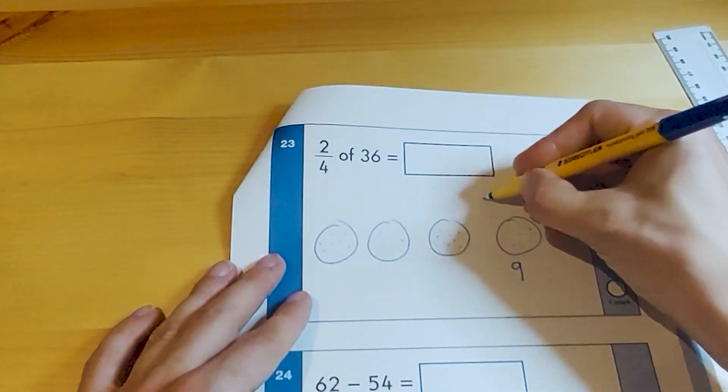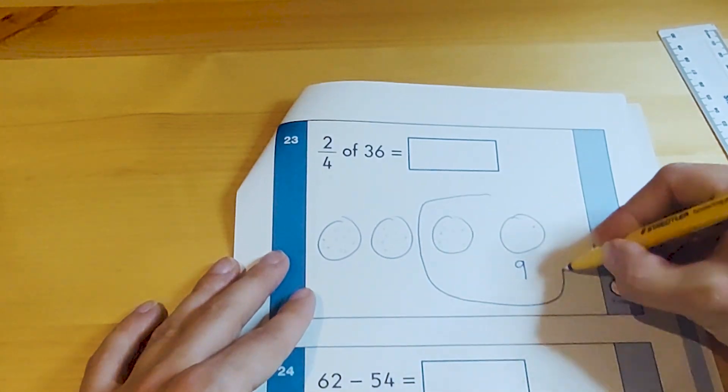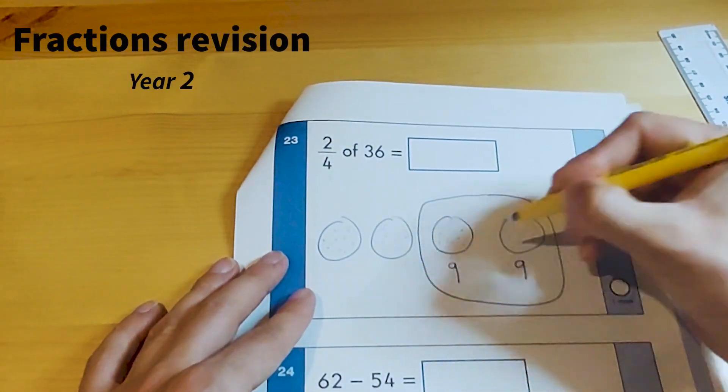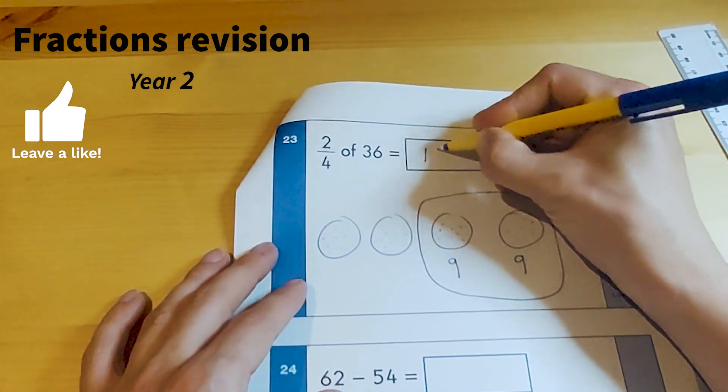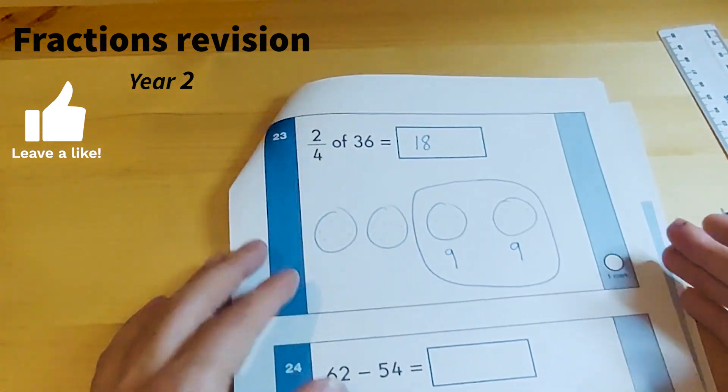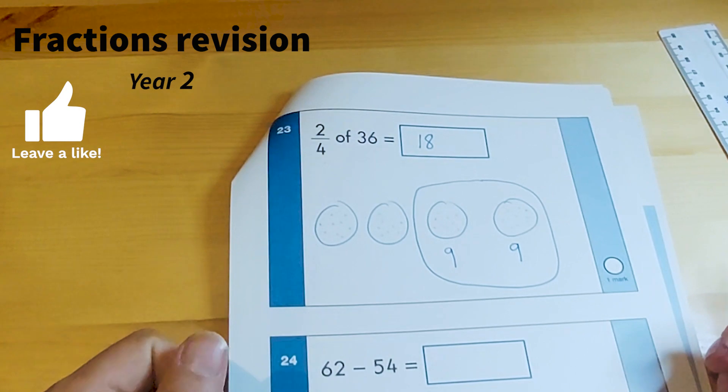We would say to the child we're looking for two quarters, which would be two of these. So that's one quarter, we're looking for two groups. So I'm going to draw another big circle around two of those groups, which would be 9 and 9, and the answer would be 18.